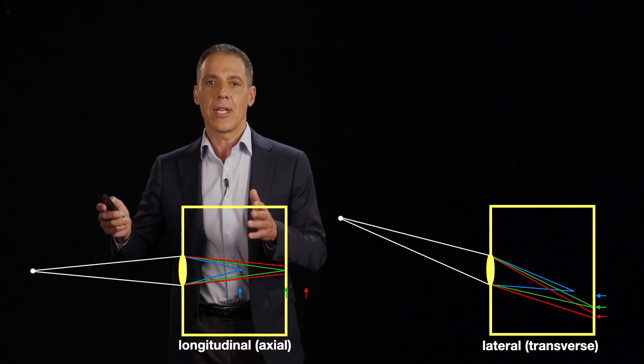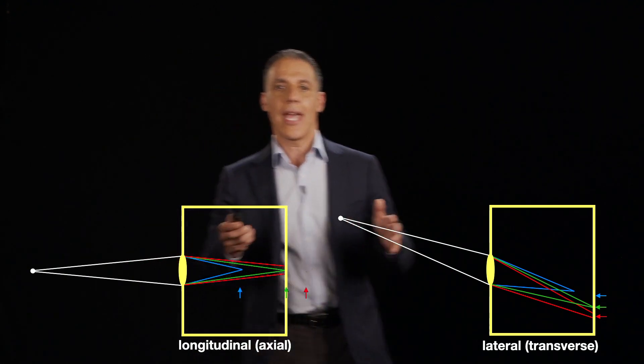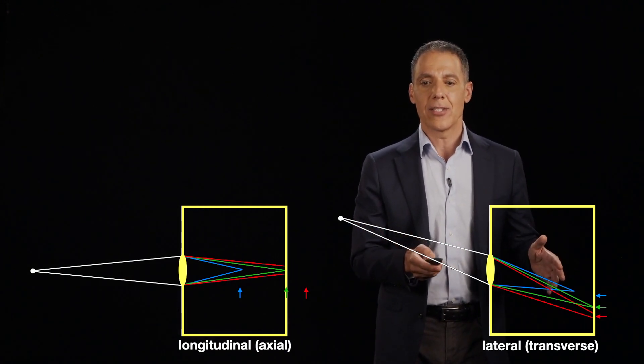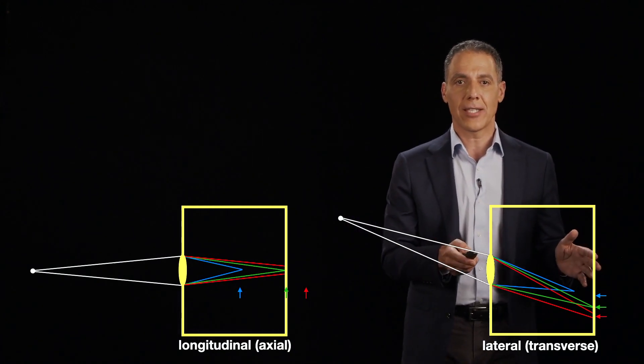The first one is this longitudinal, which has to do with the blur. And the second one is lateral, which has to do with the shift that I just showed you. So let's stay here for a second.